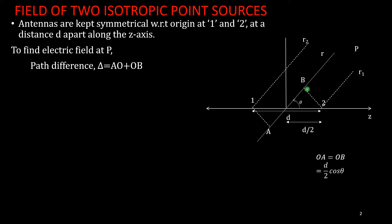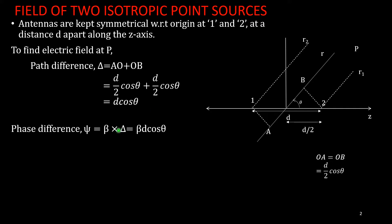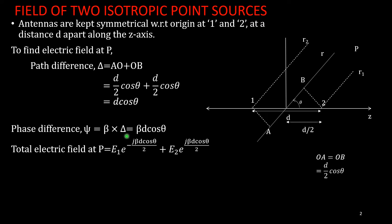AO and OB each have a value of d/2·cos(θ), because the antenna is d/2 from the origin and the angle made is theta — making d/2·cos(θ) the adjacent side. Since AO = OB = d/2·cos(θ), the total path difference is d·cos(θ). If there is a path difference, it results in a phase difference, calculated as β times the path difference, where β = 2π/λ. Therefore, the phase difference ψ = β·d·cos(θ).